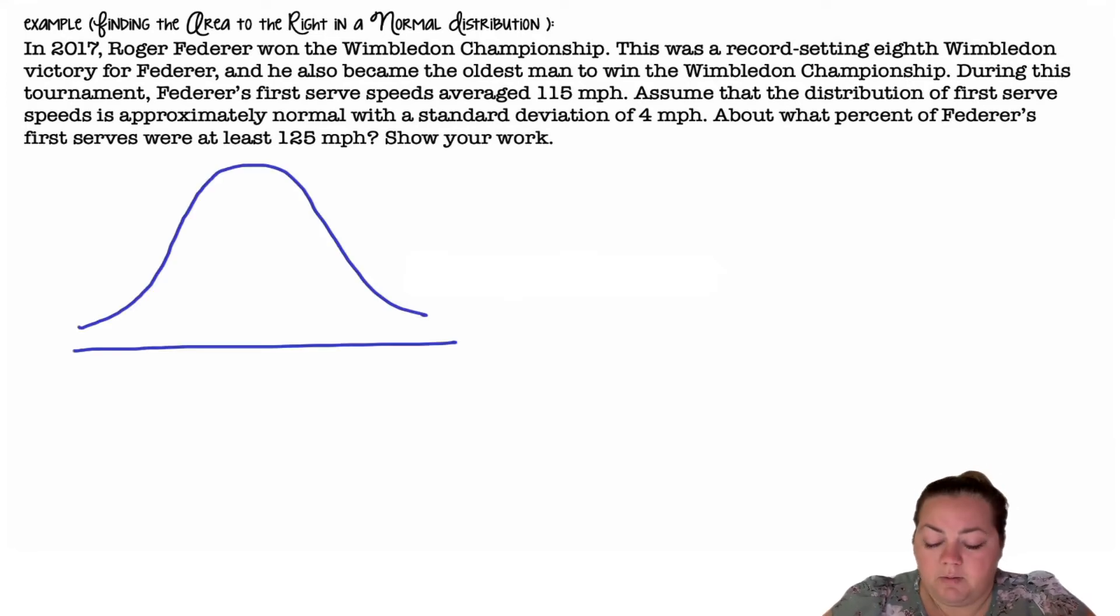Alright, so I'm going to draw my normal distribution. It has a mean of 115, a standard deviation of 4. We are going to 125, so that's above, more than two standard deviations above, and I want at least that, so that value or more.